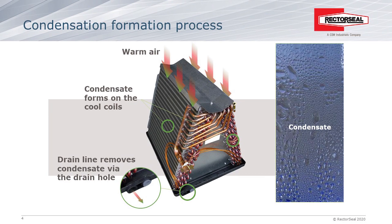Air conditioning systems remove condensation from homes and businesses by using an evaporator coil within the air handler. An evaporator coil acts similar to a cold glass with ice in it on a hot day sitting on a table — you're going to see that glass just dripping with condensation and puddling up around the bottom of the glass. The evaporator coil in the air conditioning does the same thing, removing moisture from the air that drips down onto the coil.